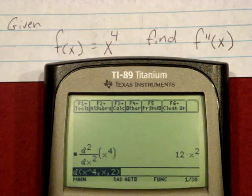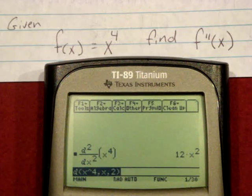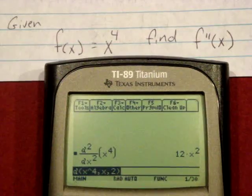In this case, d squared y of dx squared of x to the fourth is equal to 12x squared.